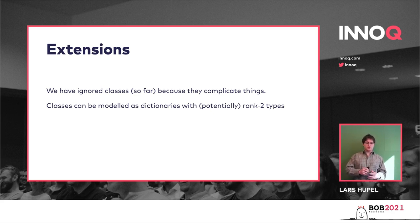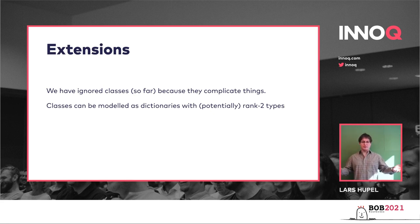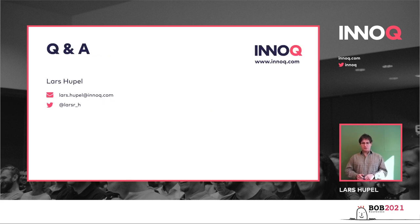I encourage you to play around with the free theorems tool by Joachim Breitner on his website. Maybe next time you write a polymorphic function in Haskell, you'll remember: if I already have this type signature, then I get these kinds of guarantees — and I don't need to write tests for that, because it's already in the type signature. And that concludes my talk — I'm very happy to take any questions now.